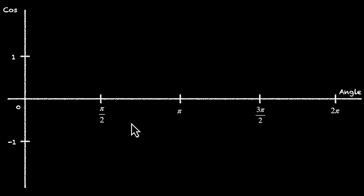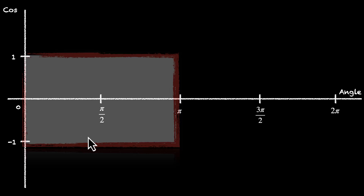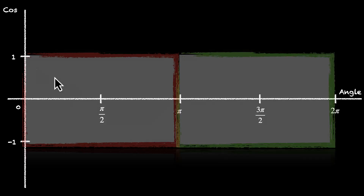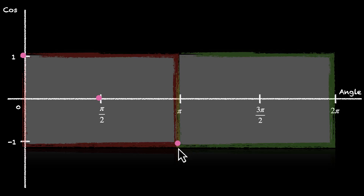Let's look at the trend first. In the first two quadrants the value is decreasing, and in the next two quadrants the value is increasing — so the graph goes down and then up. At x equals 0, cos of 0 is 1. At pi by 2, cos pi by 2 is 0. Cos of pi is minus 1. So the value is declining from 1 to 0 to minus 1. At 3 pi by 2, cos becomes 0, and at 2 pi it becomes 1.